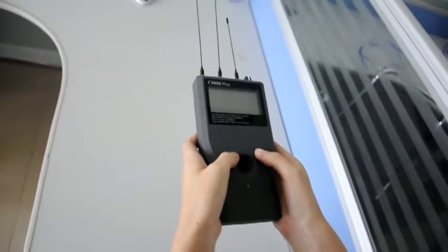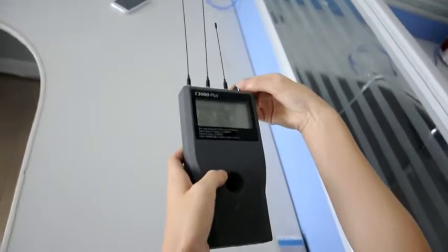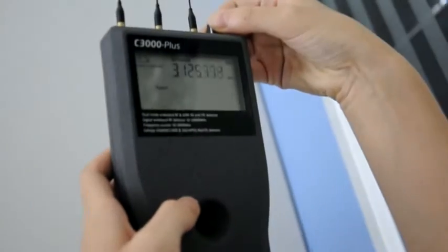Okay, this is the C3000 Plus. Let's open it by turning left this knob.